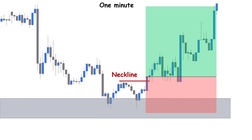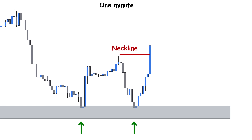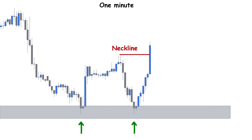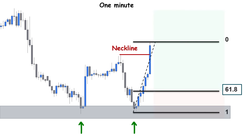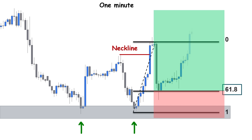Sometimes if we enter the trade right after the price breaks above the neckline, our stop will be too large. So in this case we need to wait for some sort of a pullback to enter at a better price. When this scenario happens, we combine the double bottom pattern with the Fibonacci retracement levels. We apply the retracement tool on the chart and place a buy order at the 61.8% retracement level.